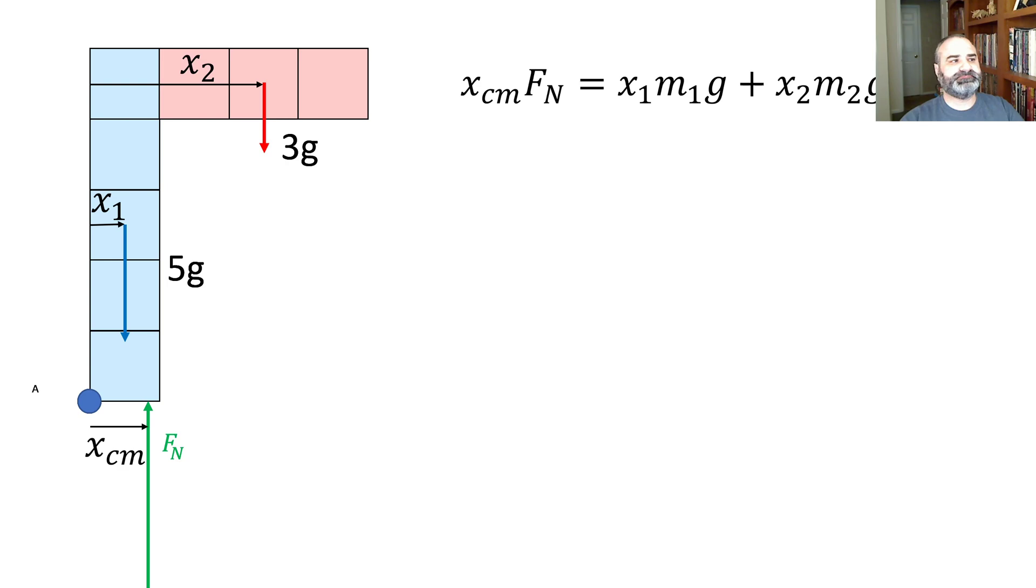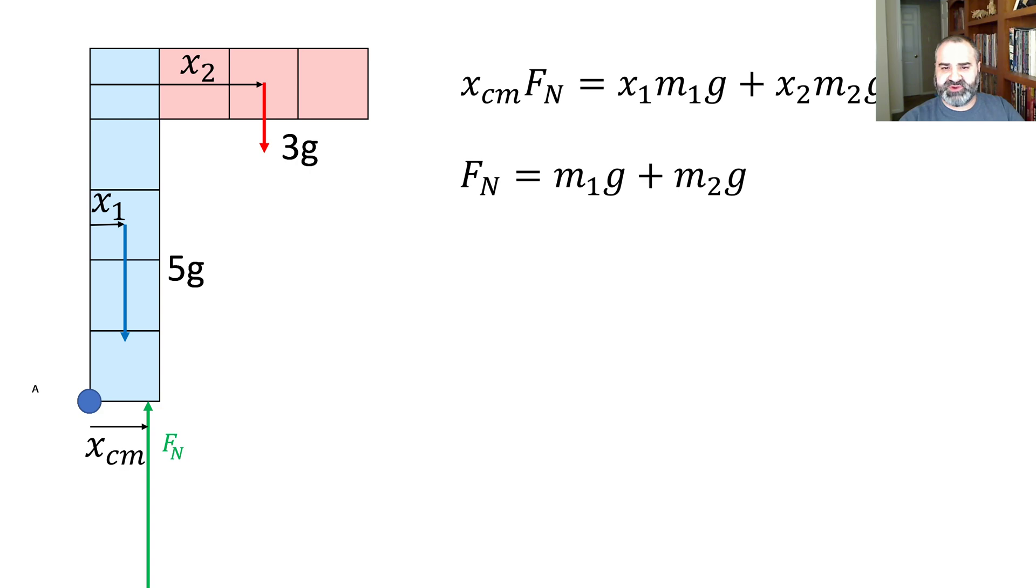Now, one important thing that you probably have already said is, I've got upward forces and downward forces, and so this normal force is just the sum of the first mass times g and the second mass times g, so 5g plus 3g.